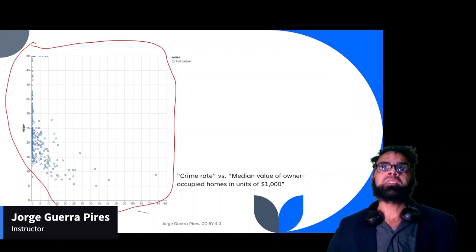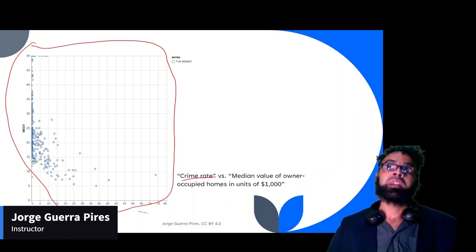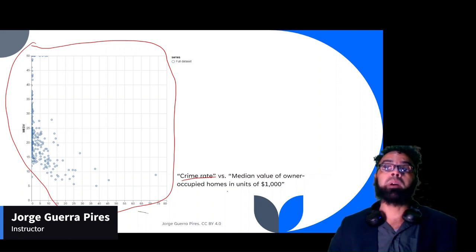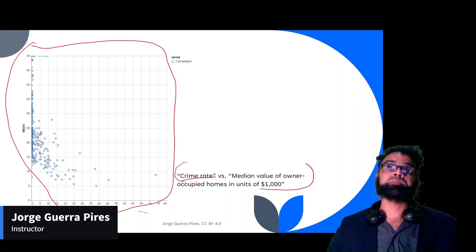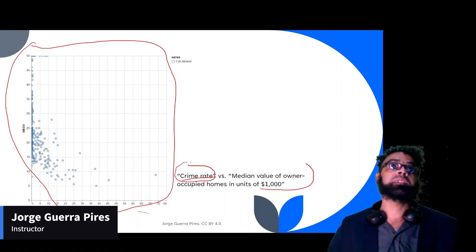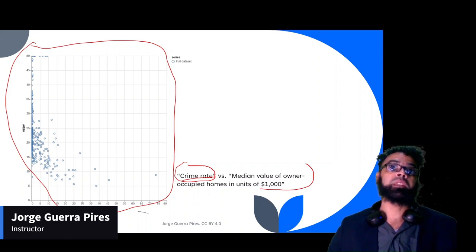In this case, you have the crime rate — the case to predict the price of a house versus the median value of the owner-occupied home units. So you're trying to predict the price of a house as a function of the crime rate.